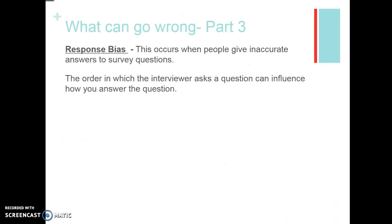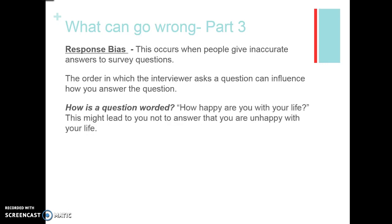Response bias means people give inaccurate answers to survey questions. The interviewer can often influence how you answer. It could be how a question is worded — for example, 'how happy are you with your life?' — which might lead you not to state that you're actually unhappy. The interviewer's presence is a huge part of this type of bias.